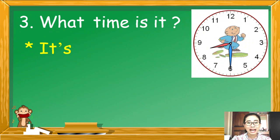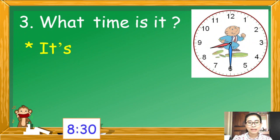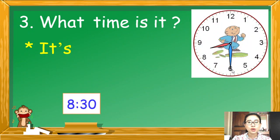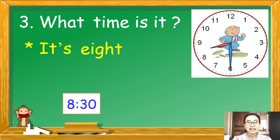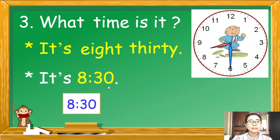เข็มยาวชี้เลข 6 ประสาอังกฤษคือเท่าไหร่คะ? 30 นาทีคือ 30 ไม่ใช่เลข 6 นะคะ เขียนได้คือ 8.30 นั่นเองค่ะ It's 8.30.